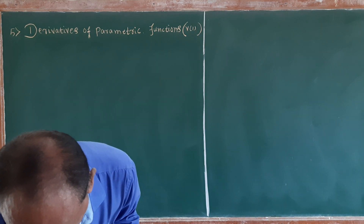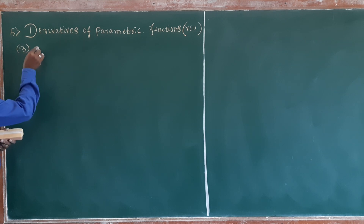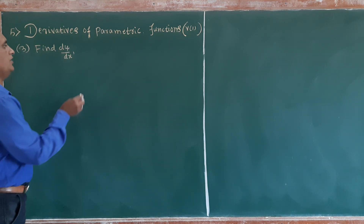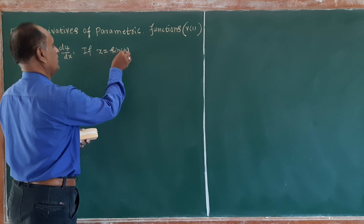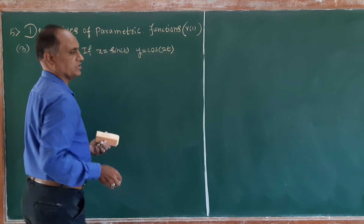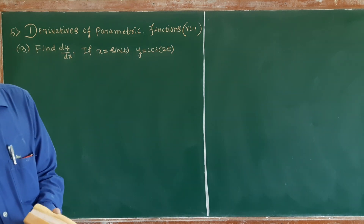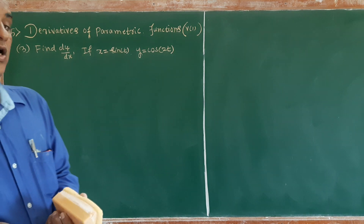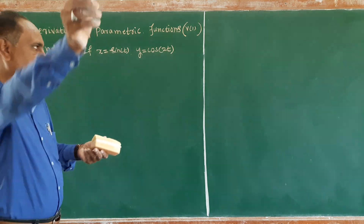Then come to the next example, example number 3: find dy/dx if x is equal to sin t and y is equal to cos 2t. Here t is the parameter. Differentiate with respect to t.